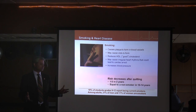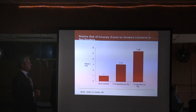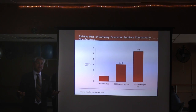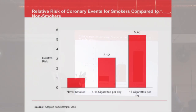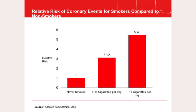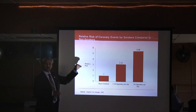Among adults, 21 percent of men and 17 percent of women are smokers, per American Heart Association 2011 data. How bad is smoking? If you've never smoked, your risk is one — normal. If you smoke 1 to 14 cigarettes per day, your risk triples. If you smoke 15 or more cigarettes per day, your risk goes up to almost five and a half times.